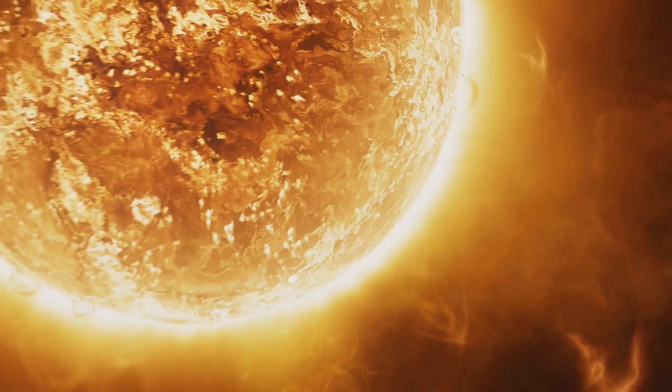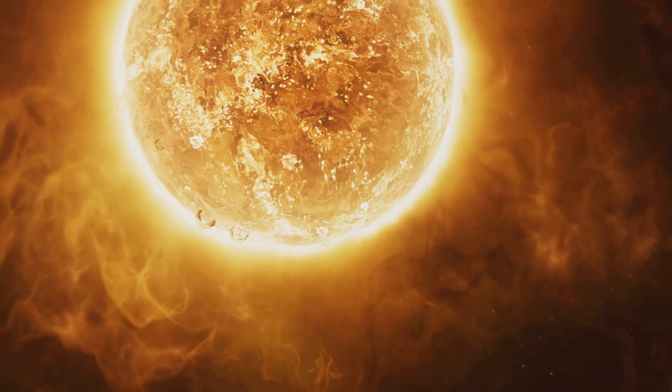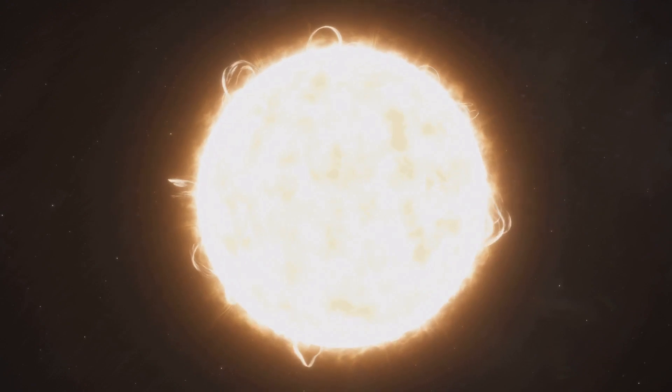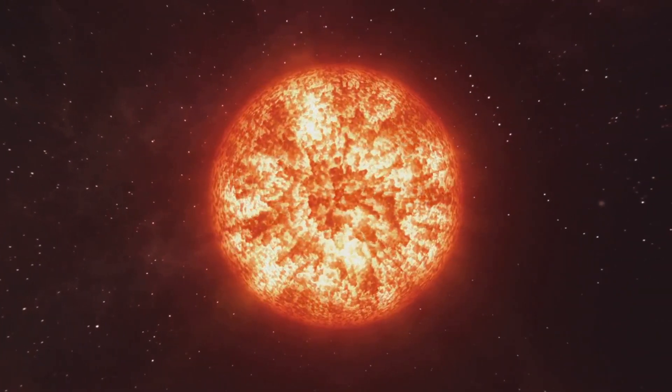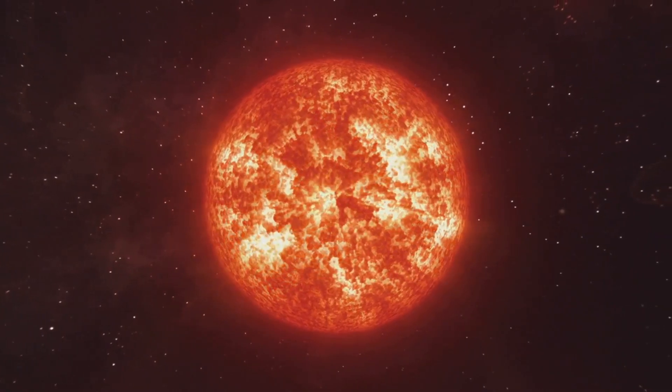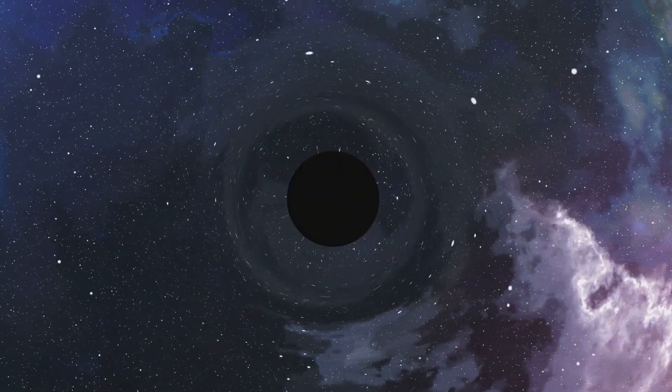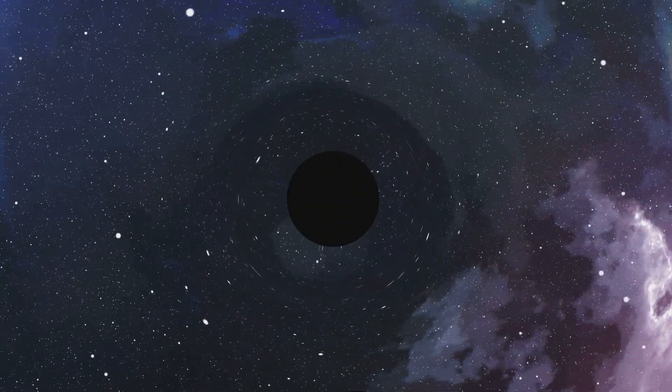Stars like our Sun burn hydrogen for billions of years, but much larger stars burn through their fuel much faster. Once the hydrogen runs out, the star can no longer support itself against gravity. The core collapses, and the outer layers explode in a supernova. What remains is a superdense core, a black hole.